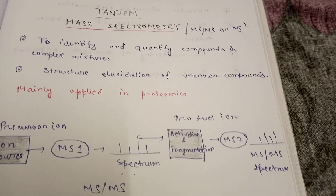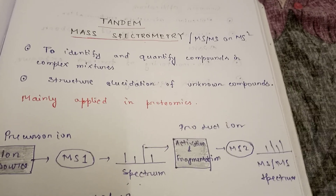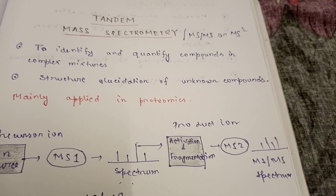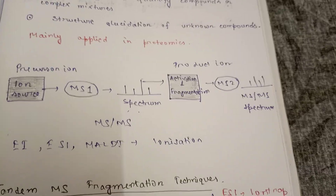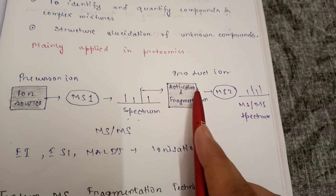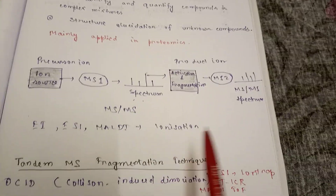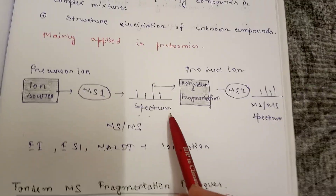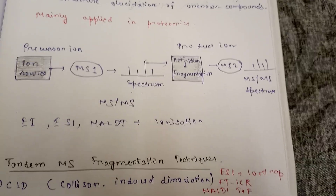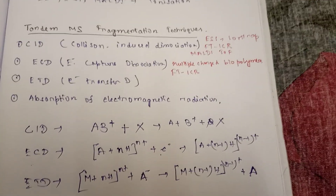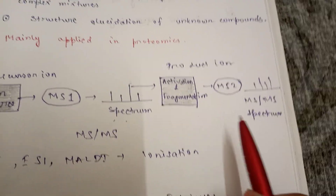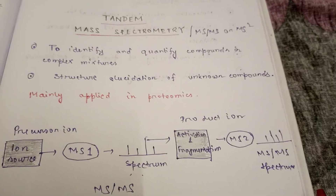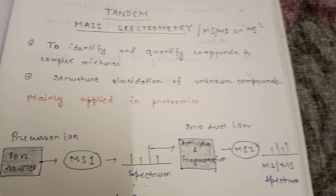In short, for a large protein, it's difficult to get the mass by doing mass spectrometry just once. That's why we do tandem mass spectrometry — repeating the process. It's doing mass spectrometry twice: with the precursor ion and with the product ion. The main ionization techniques are EI, ESI, MALDI, etc. The fragmentation techniques are important and are done after MS1 — collision induced dissociation, electron capture dissociation, or electron transfer dissociation. Then we check the final mass spectrum after the second mass spectrometry. Hope you understand tandem mass spectrometry. Thank you.